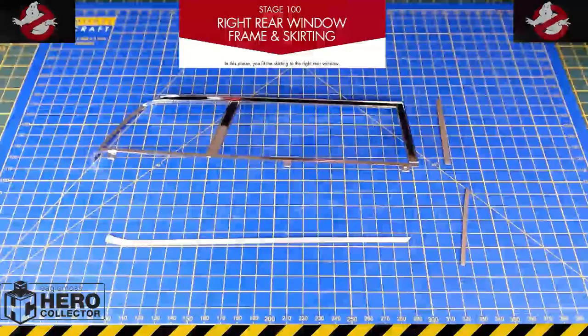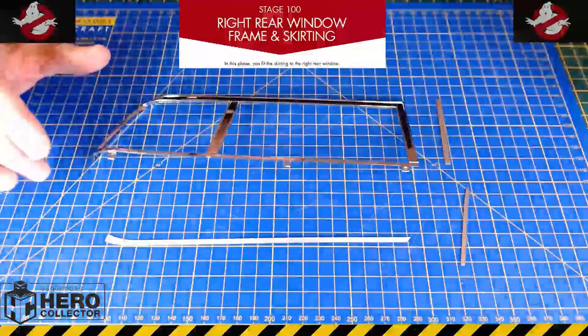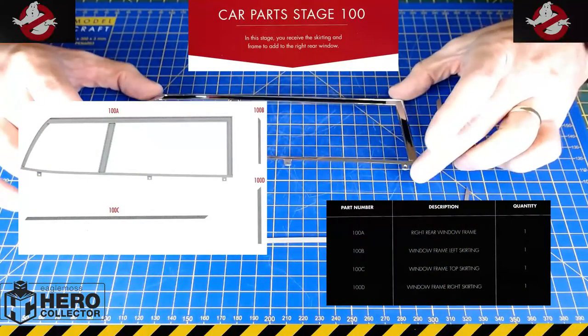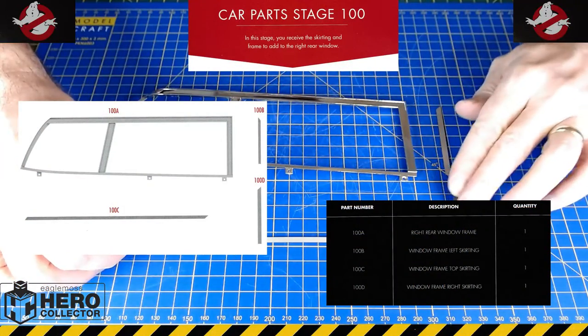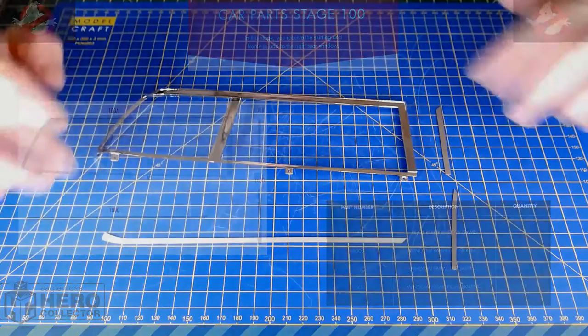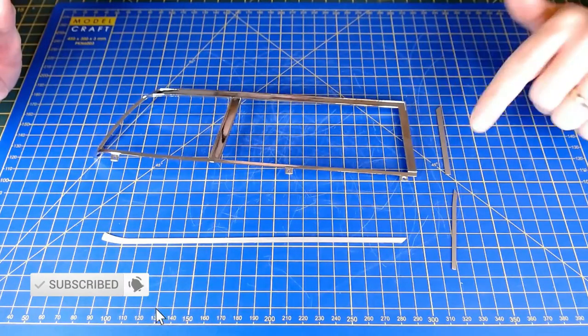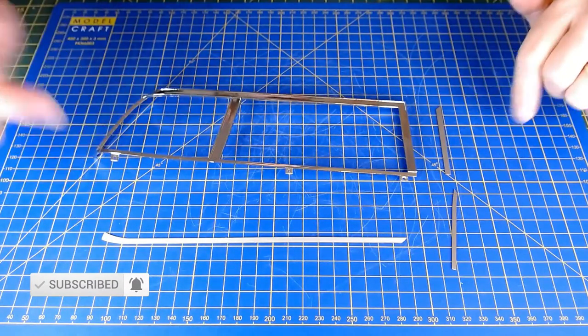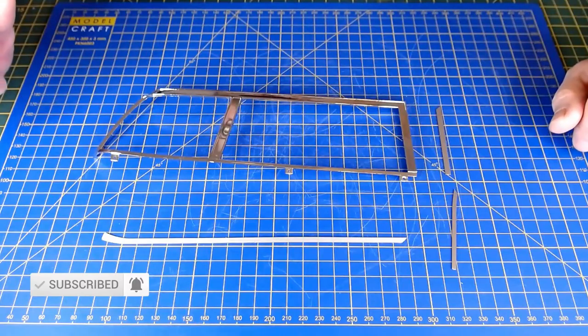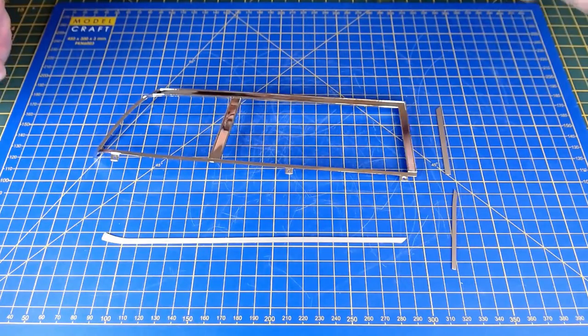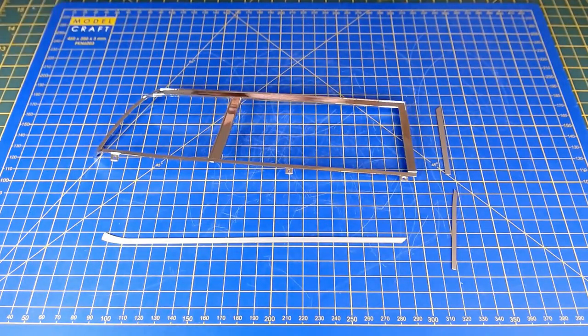Okay, so here's a few parts laid out for stage 100. It's just the right rear window framing and some detail parts that we're going to be bending and putting onto this. Only a few parts, but this did take a while last time because you have to bend these into shape. See how we get on with this one though, see if we've learnt anything from the last one. So this is going to be stage 100.